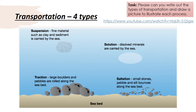Transportation — again, 4 types. Please can you write these out and draw a picture to represent each one. Traction: the large boulders and pebbles are rolled along the seabed — those arrows are really important, they show movement. Saltation: small stones, pebbles and silt bounce — they're picked up, dropped, picked up, dropped in that bouncing movement, like if you bounced a bouncy ball.